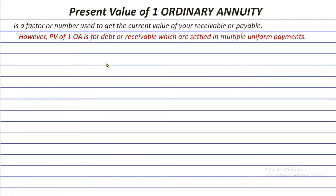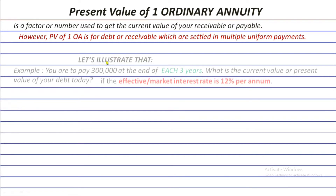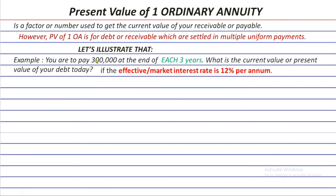If it's not yet clear, let's have an illustration. Example: you are to pay 300,000 at the end of each of the next three years. The question is: what is the current value or present value of your debt today if the effective or market interest rate is 12% per annum?